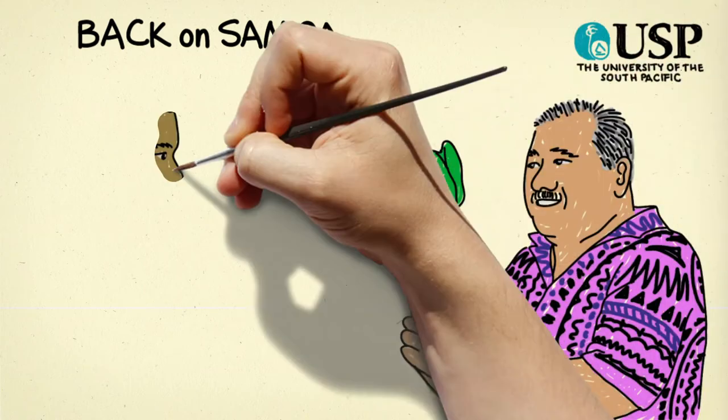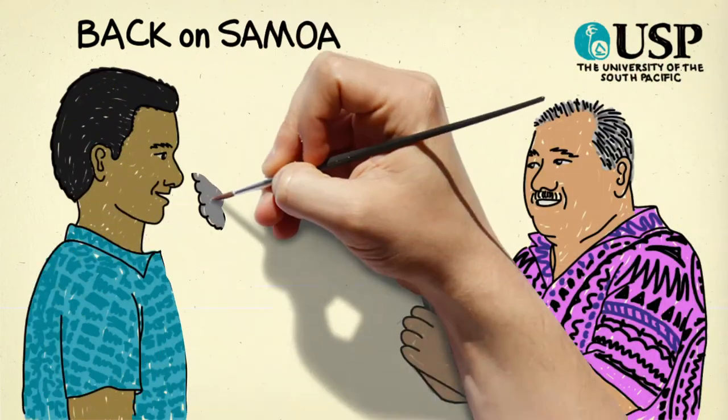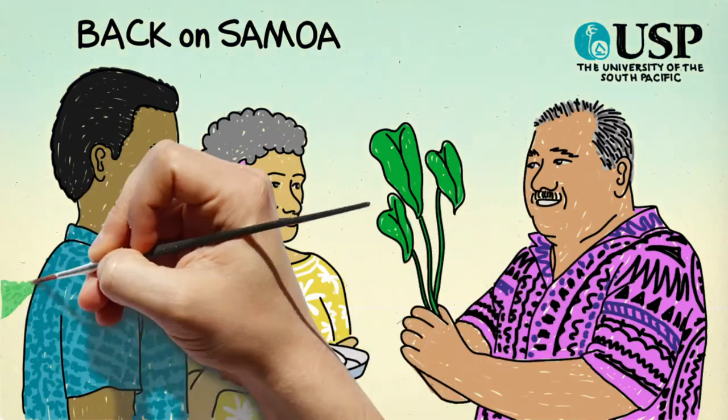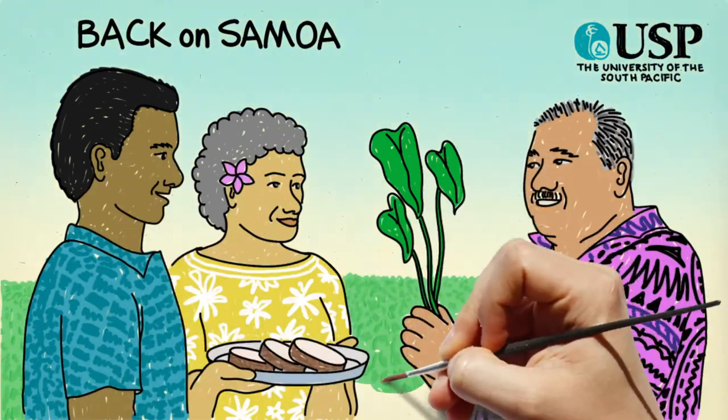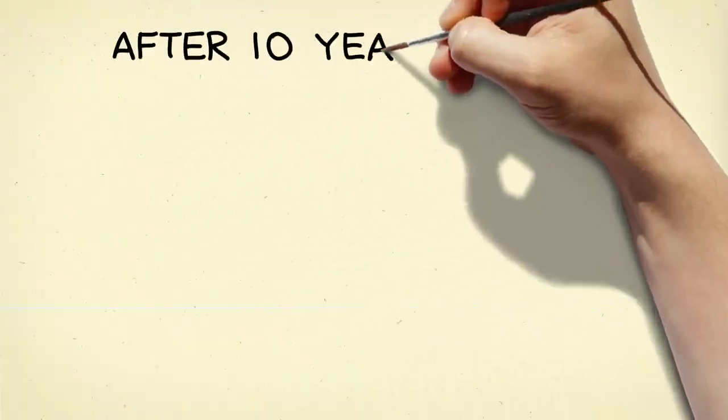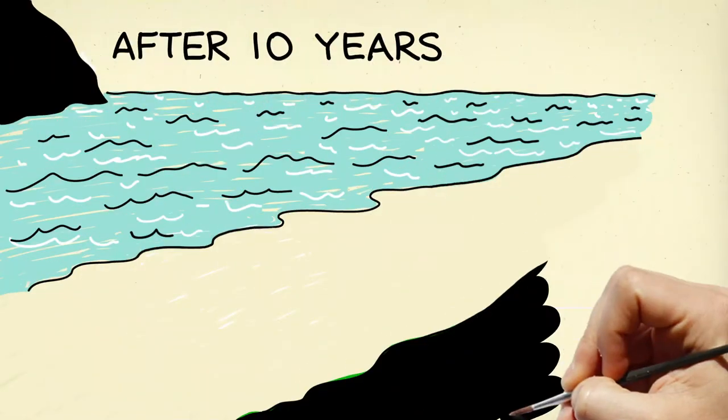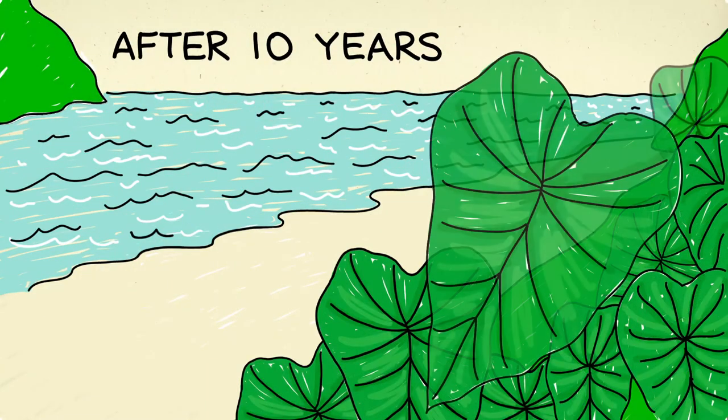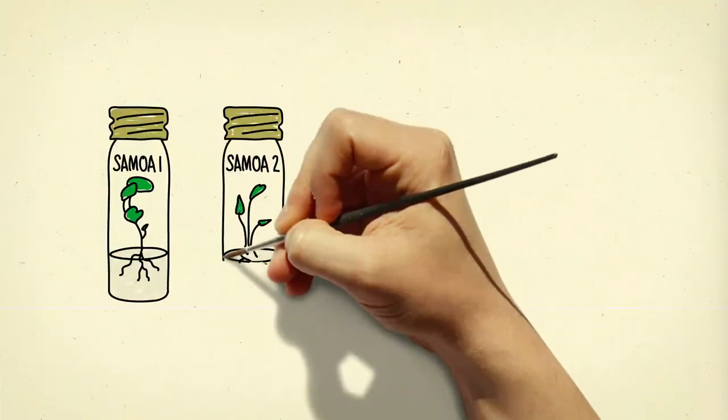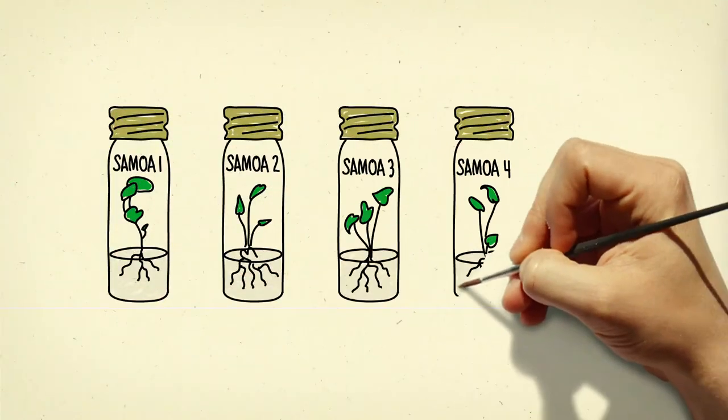Working with farmers and local communities, he cross-pollinated the strains and identified blight-resistant, high-yielding, and good-tasting crops. After 10 years of dedicated trials, the Taro fields of Samoa were thriving once again, with the 5 superior blight-resistant cultivars he had developed.